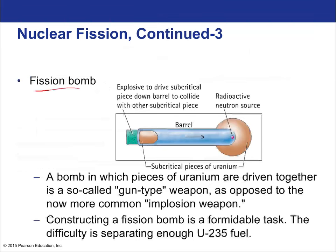A basic fission bomb works by using a conventional explosion to drive a subcritical piece of fissionable material down a barrel to collide with another subcritical piece. Each piece alone is too small — too much surface area allows neutrons to escape and prevents an uncontrolled chain reaction. There is also a neutron source continually bombarding the material.